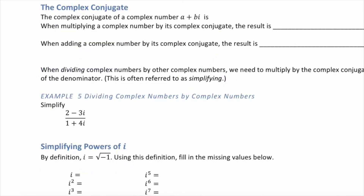The complex conjugate of a complex number a plus bi is a minus bi. When multiplying a complex number by its complex conjugate, the result is a real number. Furthermore, when adding a complex number to its complex conjugate, the result is also a real number. When dividing complex numbers by other complex numbers, we need to multiply by the complex conjugate of the denominator — often referred to as simplifying.